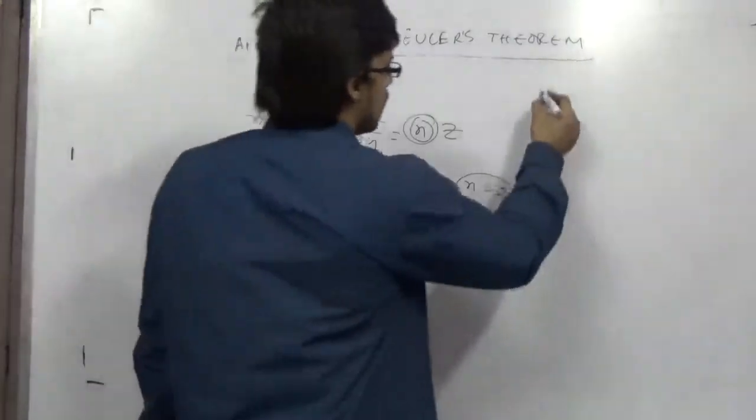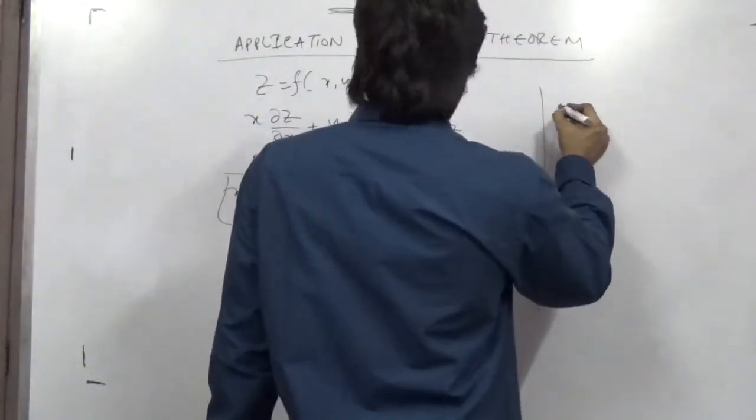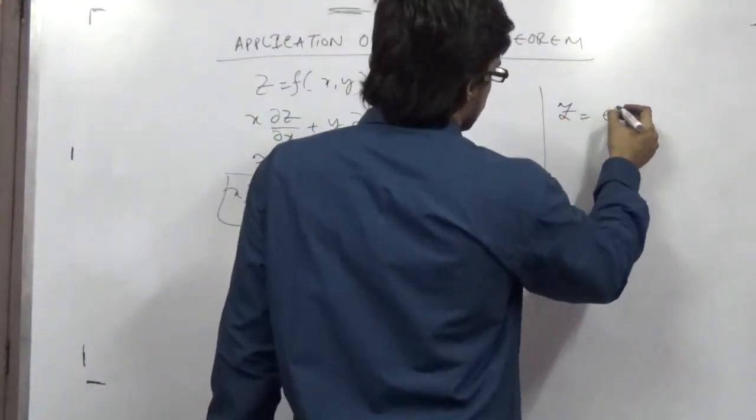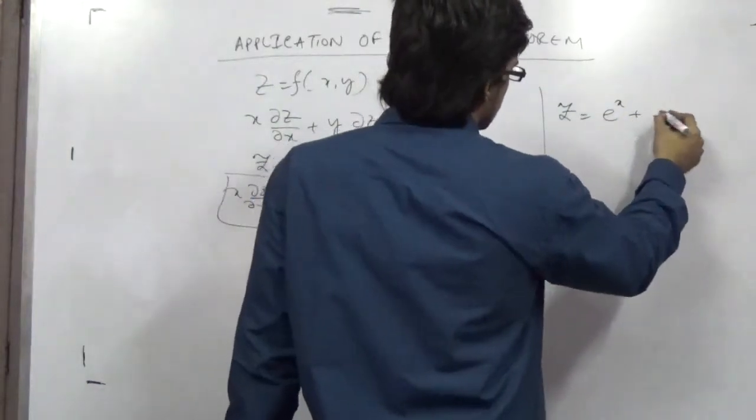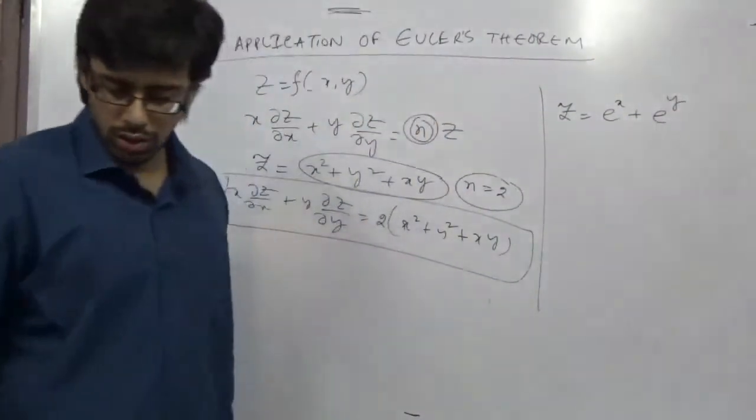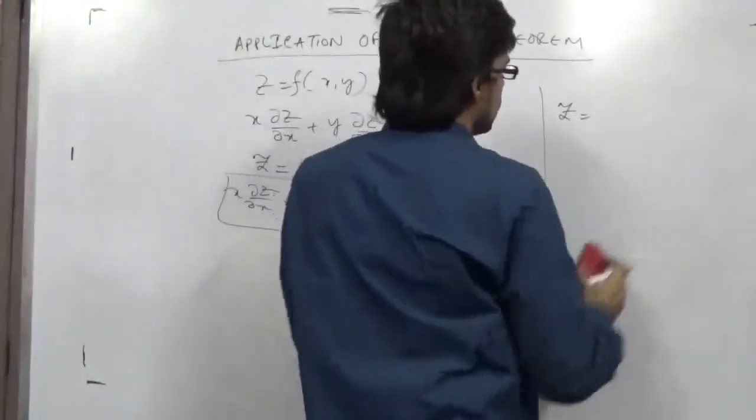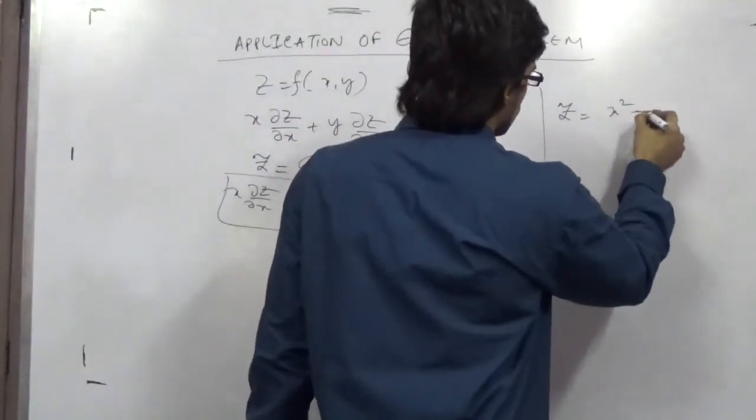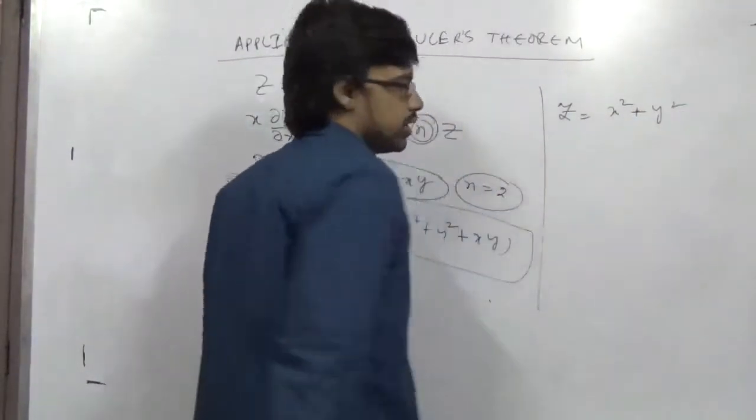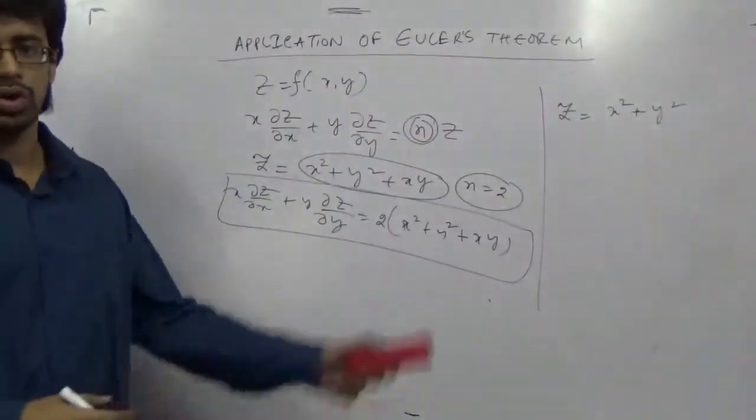I can show you another example like z equals e to the power x plus e to the power y. Or it will be a different one - this time I will show you and prove z equals x squared plus y squared. This is homogeneous of degree 2 as you can see.